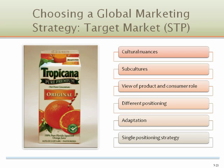Global segmentation, targeting, and positioning is more complicated than local STP. Firms considering global expansion have more difficulties understanding cultural nuances, subcultures within each country must be considered, and consumers often view products and their role as consumers differently in different countries. A product or service must often be positioned differently in different markets, though the most efficient route is to develop and maintain a single global positioning strategy.